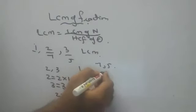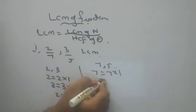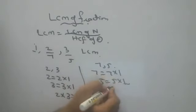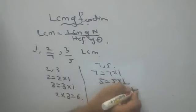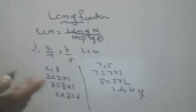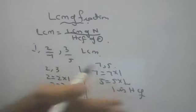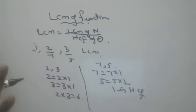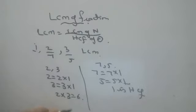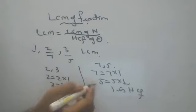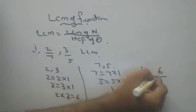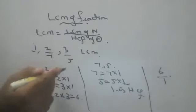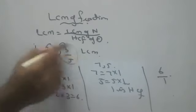And for HCF, 7 equals 7 into 1, 5 equals 5 into 1. 1 is the HCF of all numbers because nothing is common. When nothing is common, you can't take anything. 1 is the HCF. So what is the answer? 6 by 1 is the answer. 6 is the LCM of these two fractions.